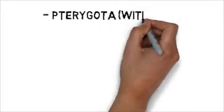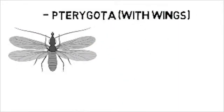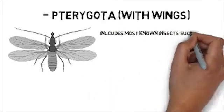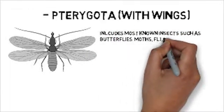The second subclass of hexapoda is pterygota, meaning winged insects. This group contains the vast majority of insects we are most familiar with, such as butterflies, ants, and bees.